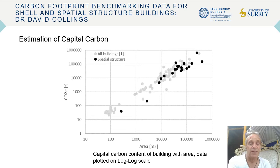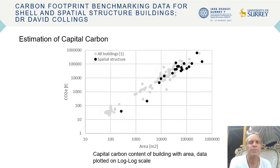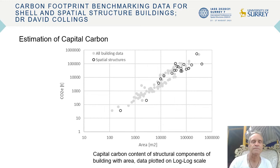Estimation of carbon based on that data: I've gone through and calculated the carbon, and you can see that in general, especially towards the larger space structures, they are very much similar to conventional buildings, maybe slightly lower. Towards the smaller end you can see there seems to be a bit more differentiation between space structures and conventional structures. This is the same data but showing just the structural content rather than the whole building carbon content.